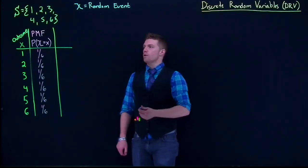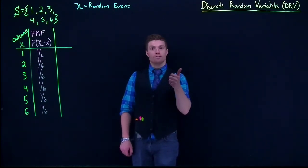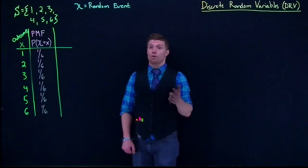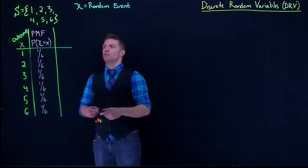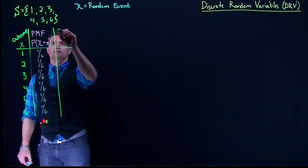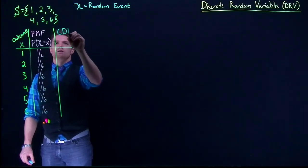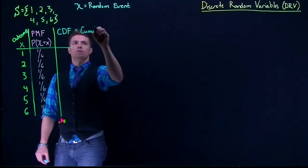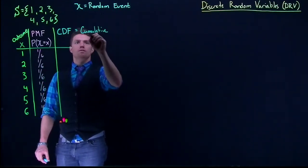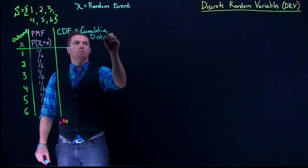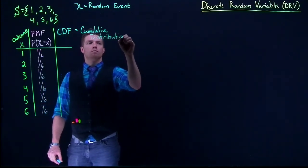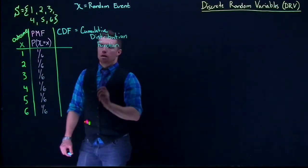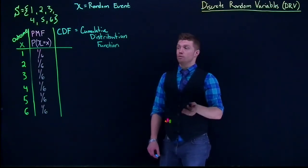Similarly, just as we were able to do the relative frequency with frequency tables, we can also do what's synonymous with that cumulative relative frequency. This is called a CDF — cumulative distribution function — and it's going to fulfill the same role as that idea of the cumulative relative frequency.